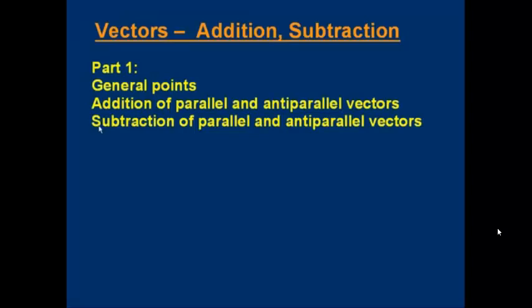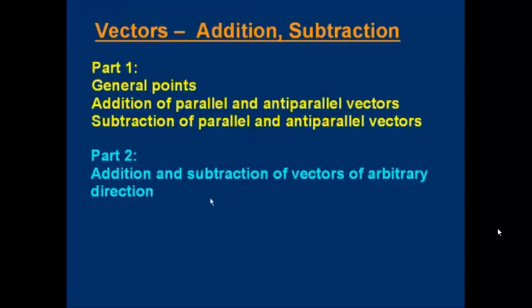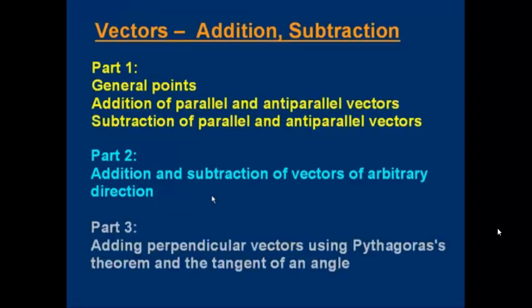Then we'll find out how to subtract one vector from another with the vectors being parallel or anti-parallel. Part two will be about how to add and subtract vectors of arbitrary direction — that means there can be any angle between them, they don't have to be parallel or anti-parallel. Part three will be about adding perpendicular vectors, using Pythagoras' theorem to get the magnitude of the new vector and the tangent of an angle to get the direction of the new vector. So that's quite an important one. Let's start with part one.